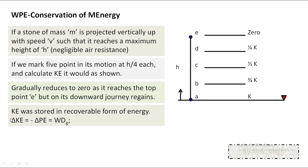The change in kinetic energy also equals the work done, since only gravitational force is acting. This gives the definition of potential energy: change in potential energy equals negative of work done by gravity. Potential energy is another form of energy which can be recovered.